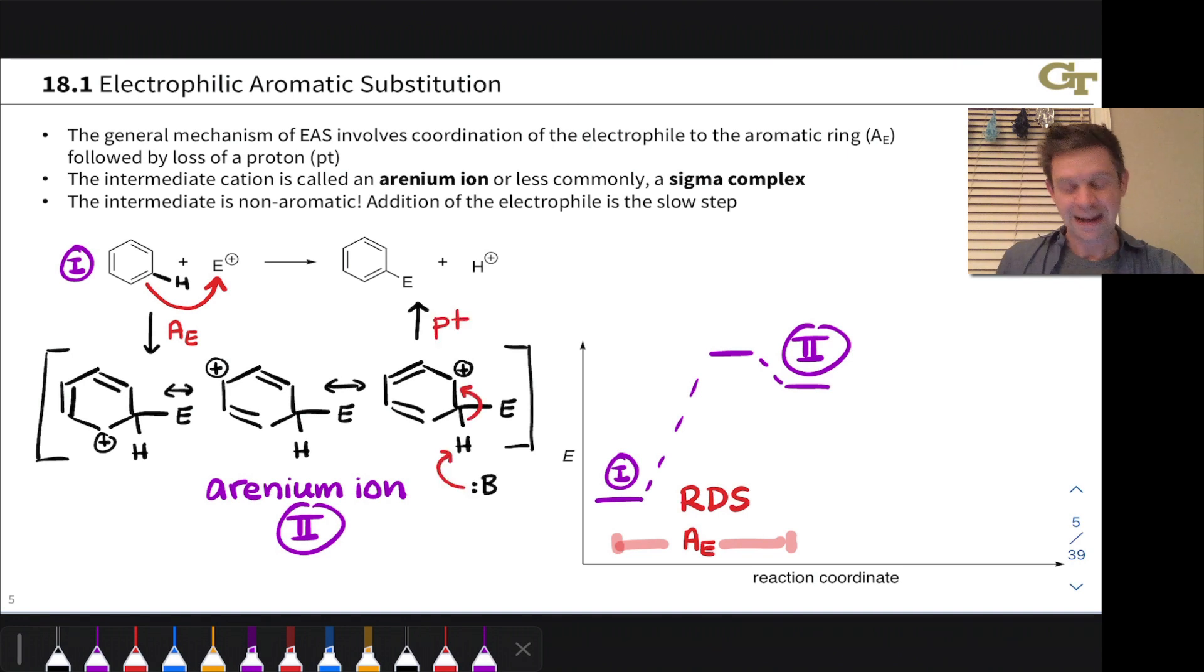So some base comes along, and the exact base is going to depend on the reaction conditions. If we're using, for example, sulfuric acid, which comes in an aqueous solution, this might be water, H2O. Some base is going to remove that proton, and the pair of electrons in the CH bond become a new pi bond between the saturated carbon and the ortho-cationic position.